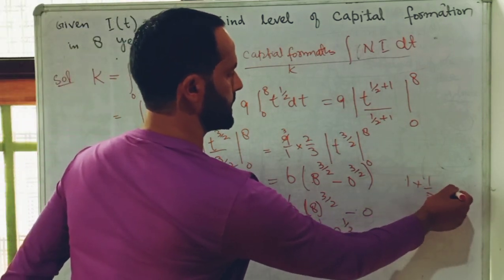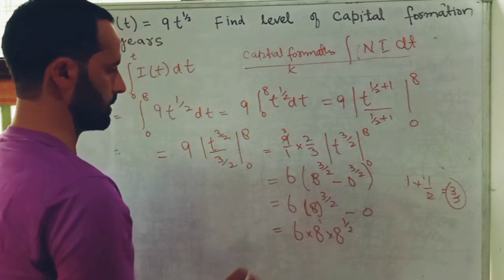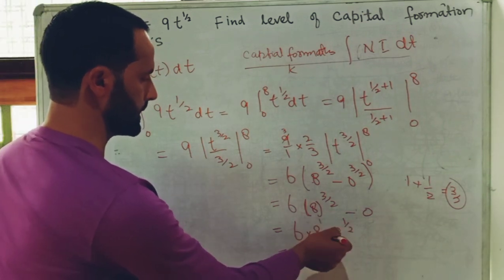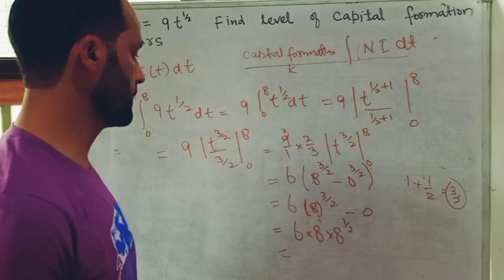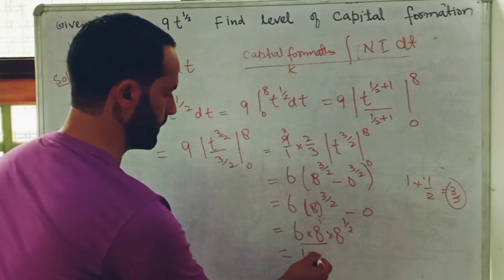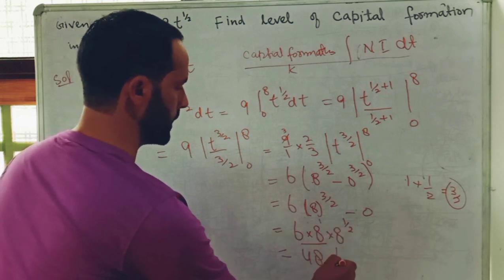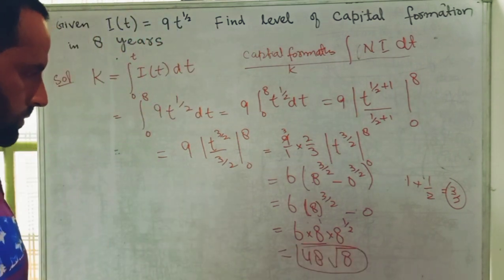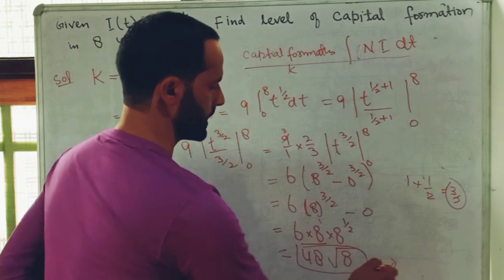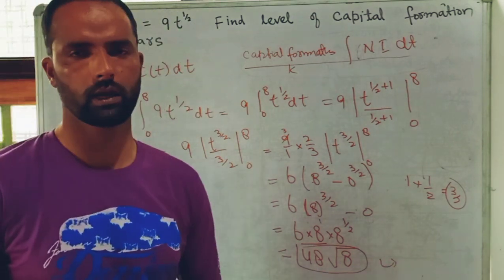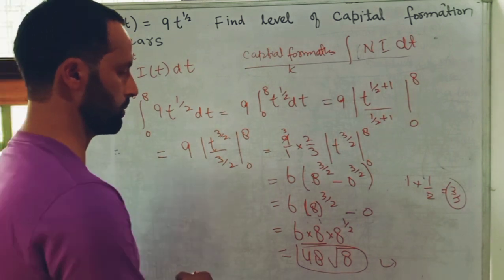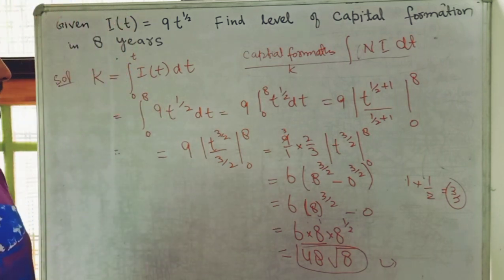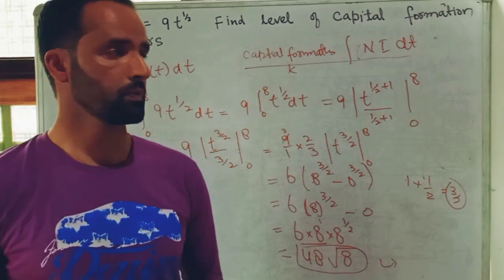Now 8^(3/2) can be written as 8 · 8^(1/2), because the bases are the same and the exponents add: 1 + 1/2 = 3/2. So 6 · 8 · 8^(1/2) = 48 · √8. The level of capital stock after 8 years is equal to 48√8. You can further manipulate this to get the numerical value. This was all about the use of the definite integral in economics.